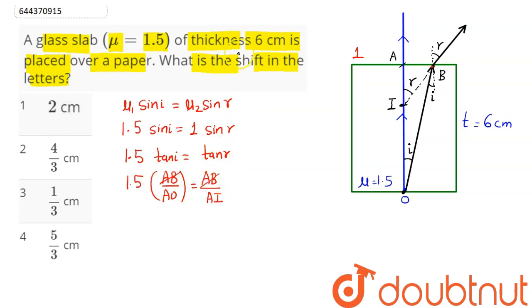...we can say this comes out to be AO equals 1.5 times AI. Hence the shift, which is equal to IO, can be written here as shift equals OI, which comes out to be AO minus AI.